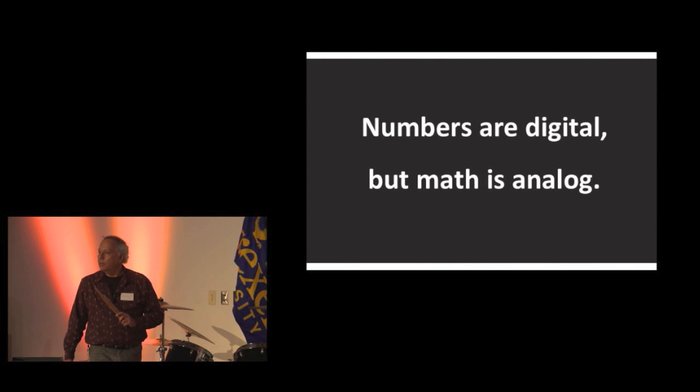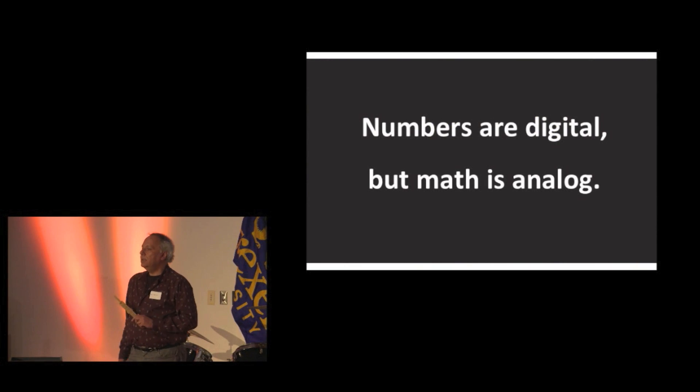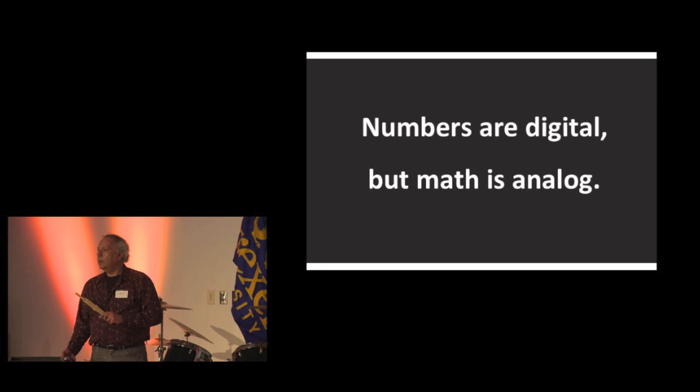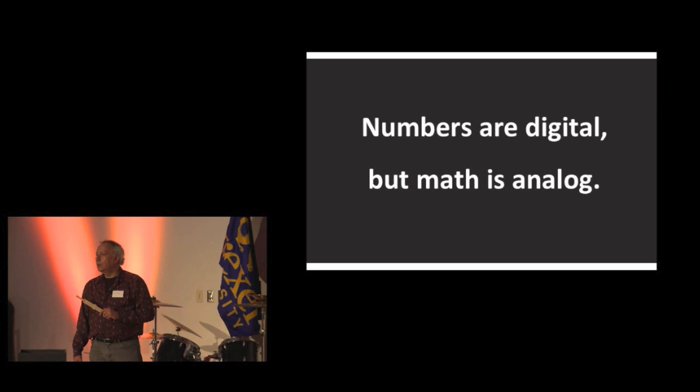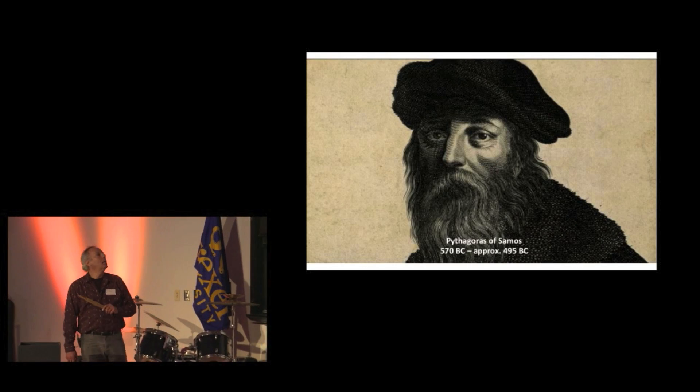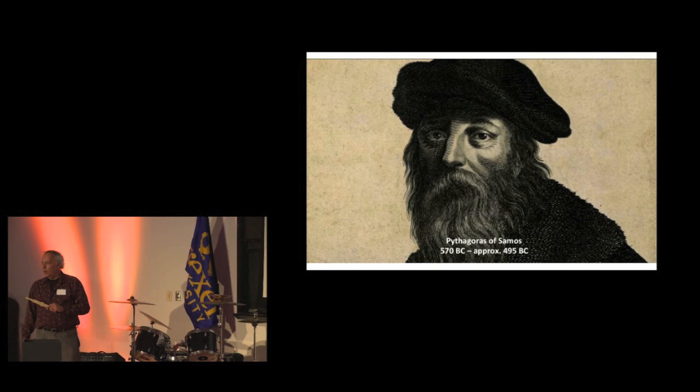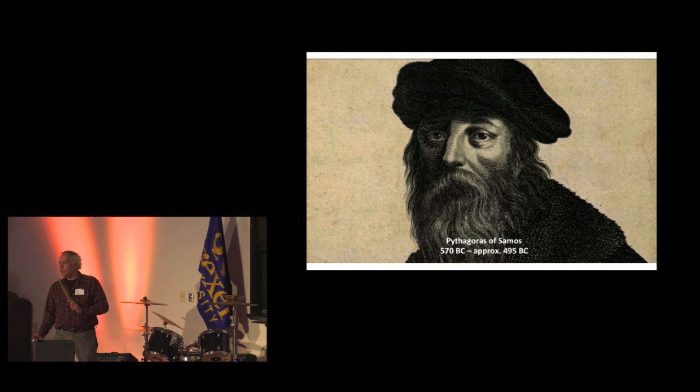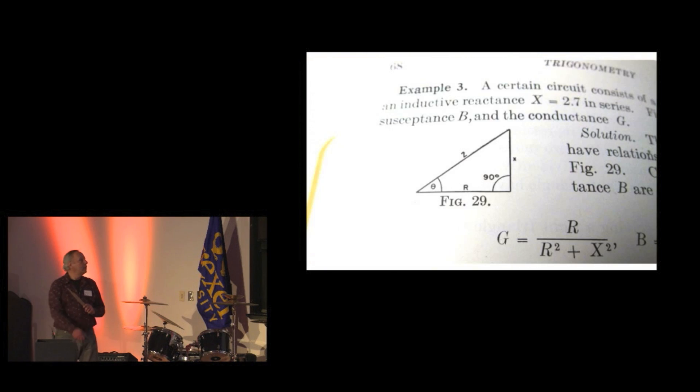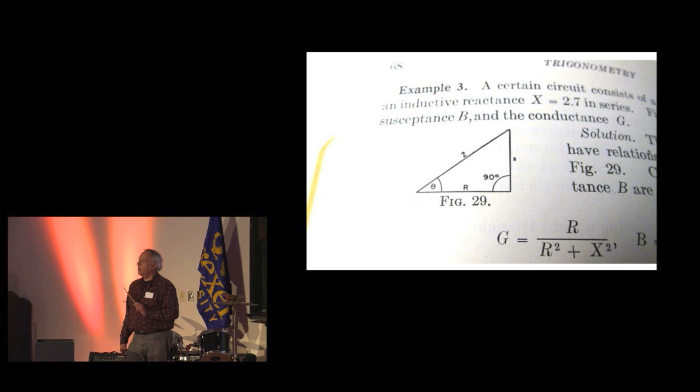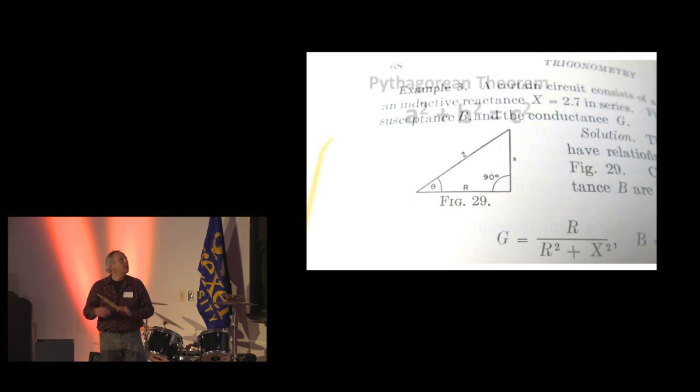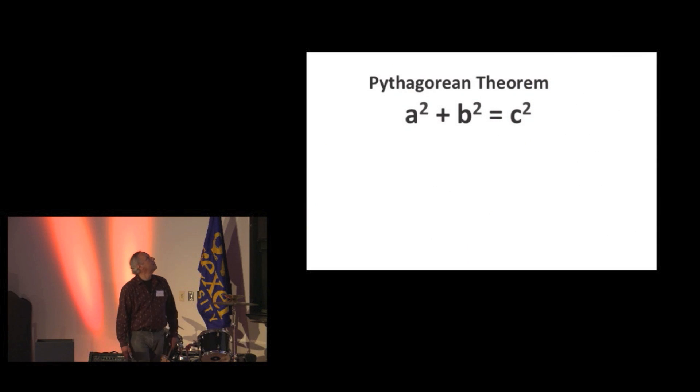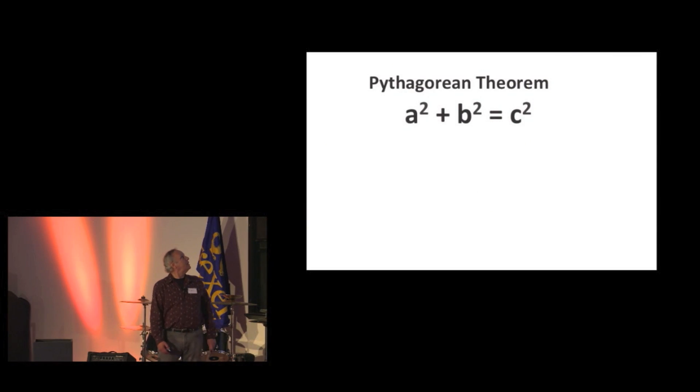Which leads me to this. My feeling on math is that while numbers are digital, math is analog. And this point was not lost on Pythagoras, who was horribly obsessed with the triangle, but that was not his only obsession. So, you probably know Pythagoras from this: the Pythagorean theorem, a squared plus b squared equals c squared. Familiar to everyone?